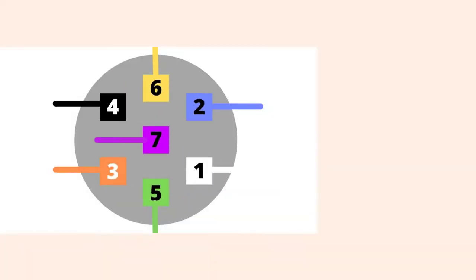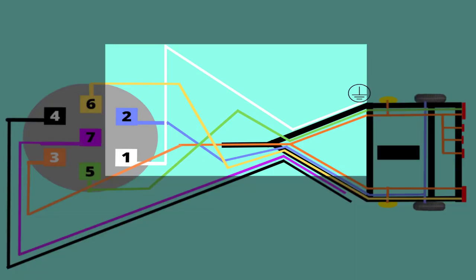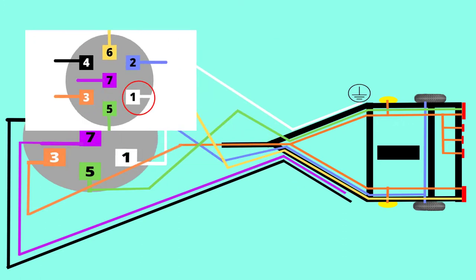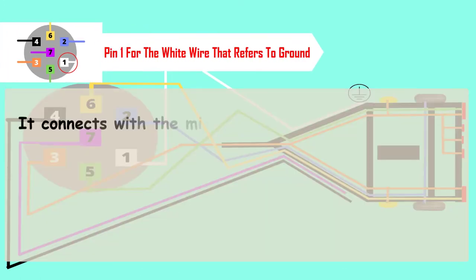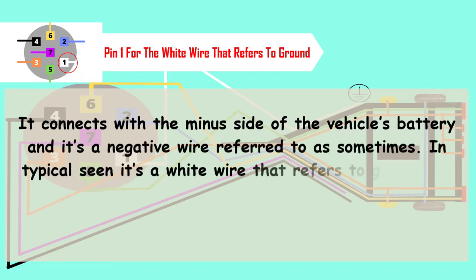Pin 1 is basically for the white wire that refers to ground. It connects with the minus side of the vehicle's battery and it's a negative wire. In typical scenes, it's a white wire that refers to ground. It basically travels towards all the brakes as well as the lights in the vehicle.